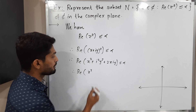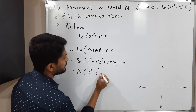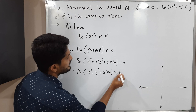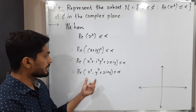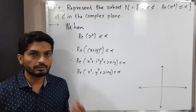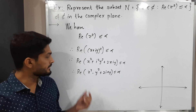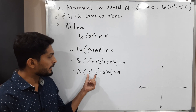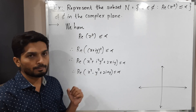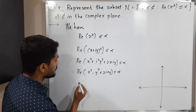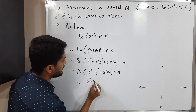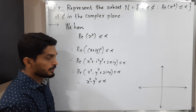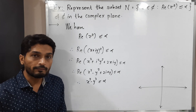We know the value of i² is minus 1, so the expansion becomes x² minus y² plus 2ixy. Since we are interested in just the real part, the imaginary term 2ixy drops out. Therefore the real part is x² minus y², giving us x² minus y² less than or equal to alpha.